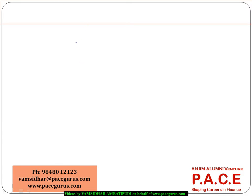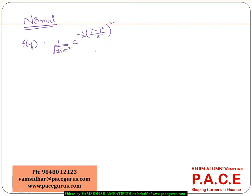Let's get started with a normal distribution. First of all, I need to know how I can establish it in the form of an exponential family. We know that the density function for a normal distribution is 1 over root(2*pi*sigma^2) times e to the power of minus one-half times ((y minus mu) over sigma) squared.